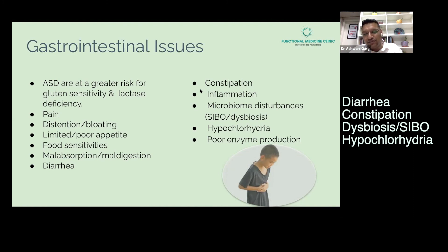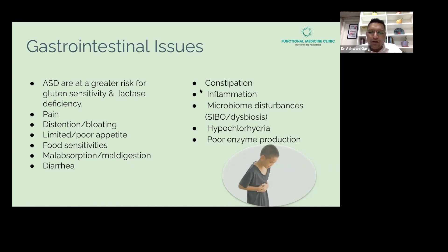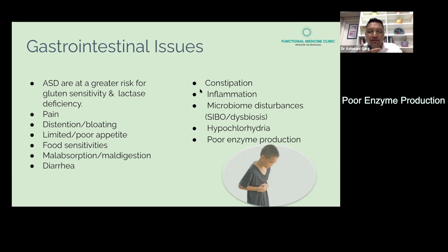If we run tests, we can find dysbiosis on a microbiome test, or through a hydrogen breath test we might find SIBO. They may also have hypochlorhydria — meaning the stomach produces less hydrochloric acid to digest food — or poor enzyme production. We have to identify and solve these problems carefully.